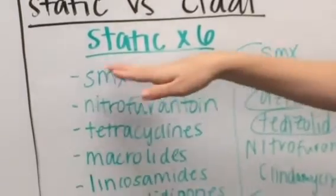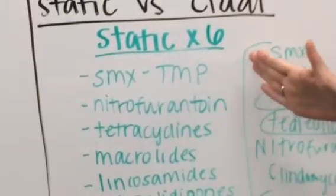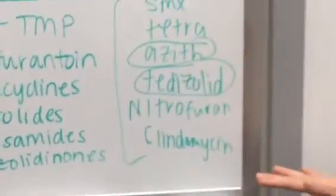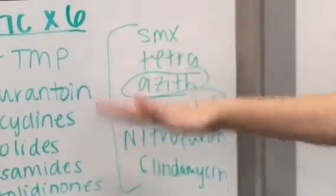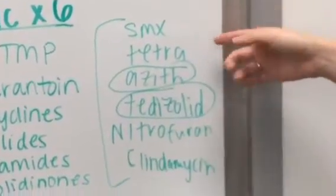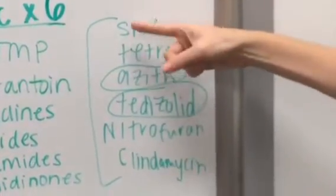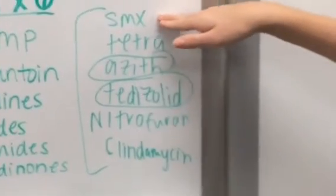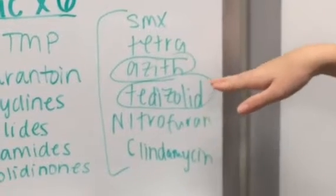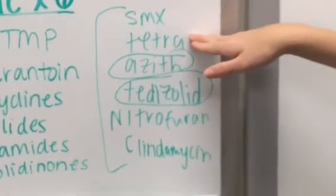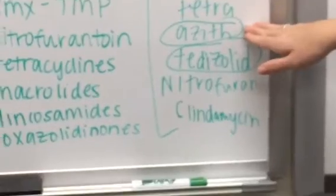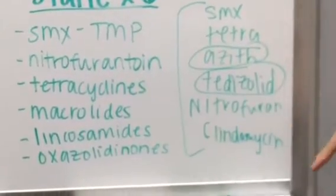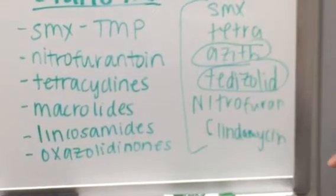So again, static has six different letters in it and that's going to represent our six different groups. I was playing around with the formation of this a little bit to try and see if there was an easier way to remember these six. I came up with if you can spell out the word static, you could think of sulfamethoxazole trimethoprim being that S. And then T is going to be our tetracyclines. And then A, this is going to be our macrolides. Azithromycin is an example of a macrolide, so that fits in that category.